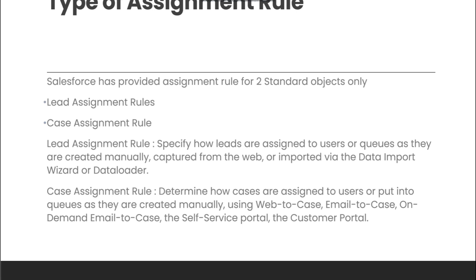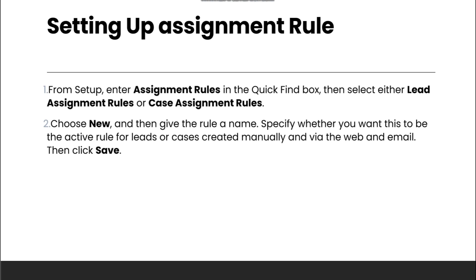There are two types of assignment rules: lead assignment rules and case assignment rules. Lead assignment rules specify how leads are assigned to users or queues as they are created manually, captured from the web, or imported via the data import wizard or data loader. Case assignment rules determine how cases are assigned to users or a queue. Lead assignment rules are used for leads and case assignment rules are used to assign cases.